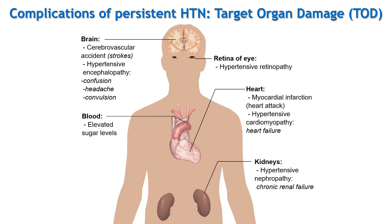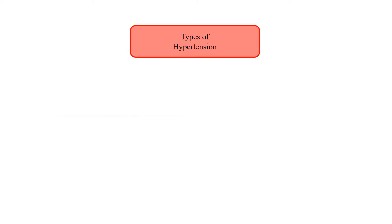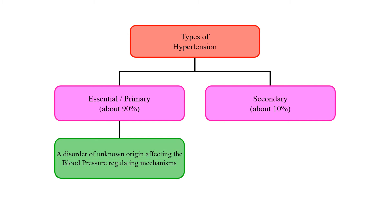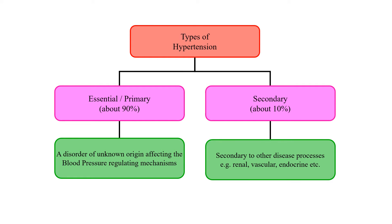If hypertension is left untreated, it can cause target organ damage from blood vessels to brain. Hypertension affects many major organs. In the heart, it can cause acute myocardial infarction and hypertensive cardiomyopathy leading to heart failure. Hypertensive nephropathy leads to chronic kidney failure. Hypertensive retinopathy affects the eye, and in the brain it causes cerebrovascular accident known as stroke. Hypertension is of two types: primary or essential hypertension when the cause is unknown (about 90% of cases), and secondary hypertension (about 10% of cases) when the underlying cause is known — for example, kidney disease, vascular disease, or certain endocrine conditions like pheochromocytoma, a tumor of the adrenal gland secreting excessive adrenaline and noradrenaline.